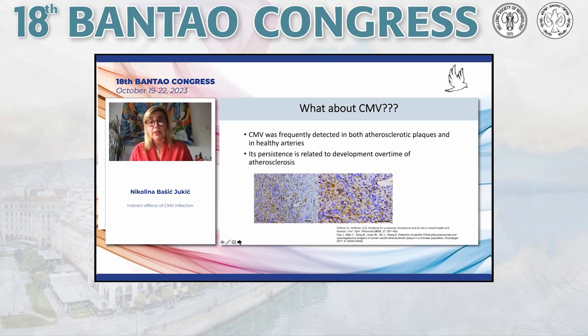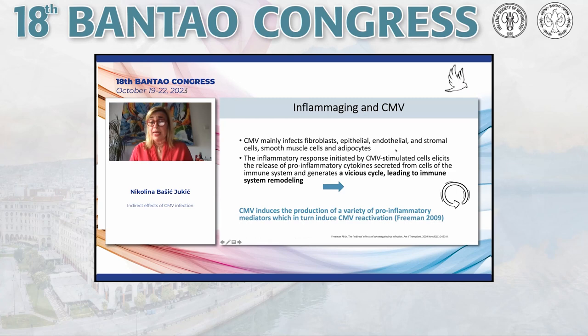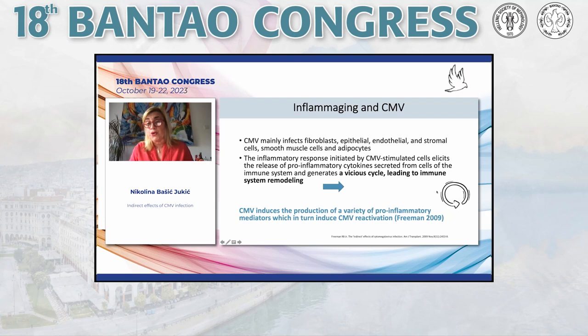So what about CMV? CMV is a potential promoter of vascular aging. It has been frequently detected in both atherosclerotic plaques and healthy arteries, and its persistence is related to the development of atherosclerosis over time. CMV may infect fibroblasts, epithelial, endothelial, and stromal cells, smooth muscle cells, and adipocytes. The inflammatory response elicits pro-inflammatory cytokines from immune cells, generating a vicious circle of immune system remodeling. CMV may induce pro-inflammatory mediators that in turn trigger CMV reactivation.